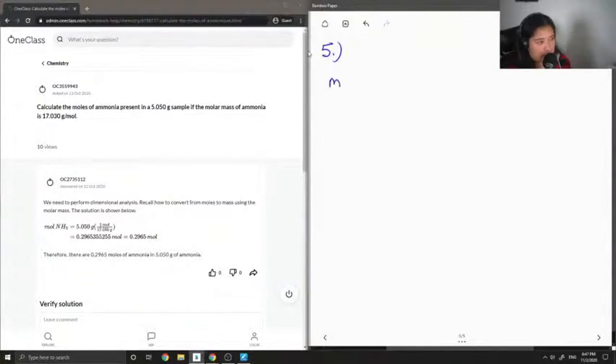Mass is equal to 5.05 grams. They already gave us molar mass which is 17.030 grams per mole. We're looking for number of moles, so we're going to use the equation n equals mass over molar mass.